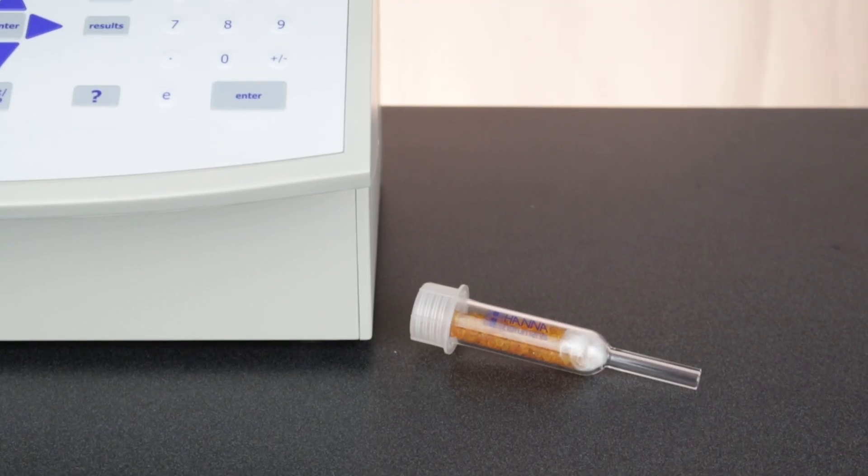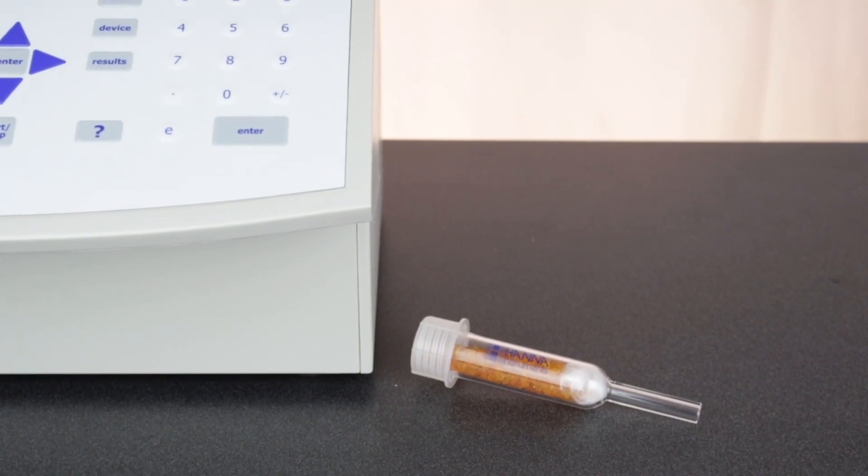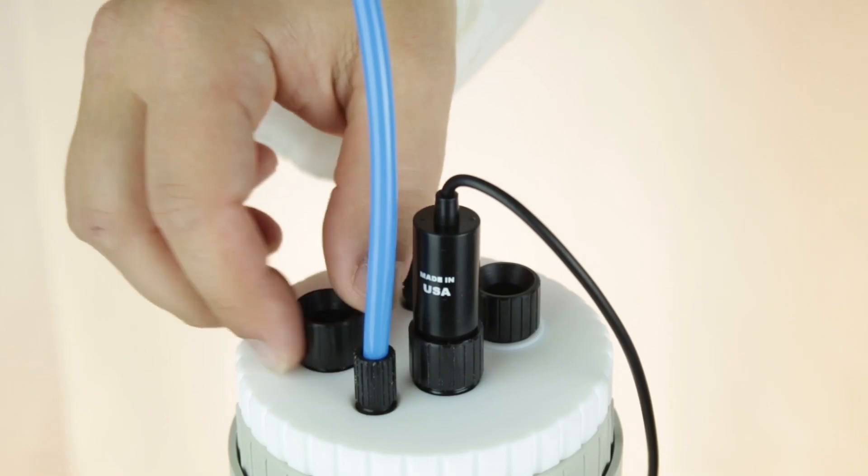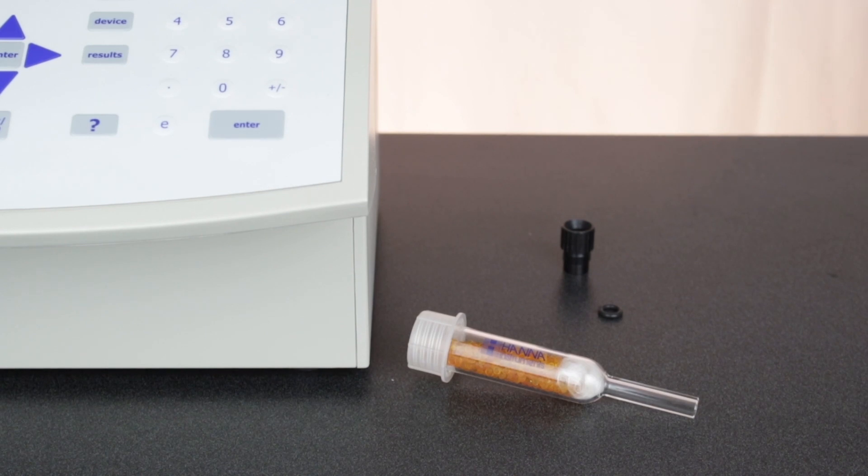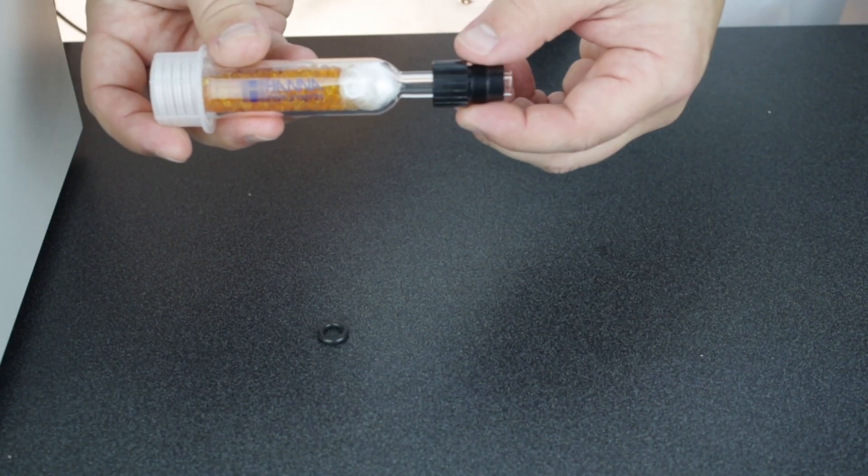Now, we'll add the desiccant cartridge. Use a cartridge that does not have a hose barbed cap. This will help ensure a dry cell. Remove the 10 mm fitting and O-ring and insert the cartridge through each, starting with the fitting, followed by the O-ring.